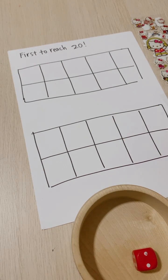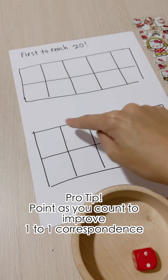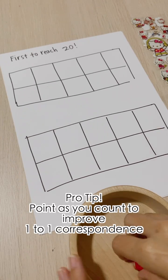with your child to make sure that there are 20 squares: 1, 2, 3, 4, 5, 6, 7, 8, 9, 10. So you want to point as you count and tell them this is the finishing line. So the first